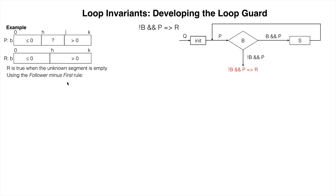If we want the number of elements in the segment to be 0, then the follower minus the first should equal 0. j minus h should equal 0, or h equals j, which is not b.